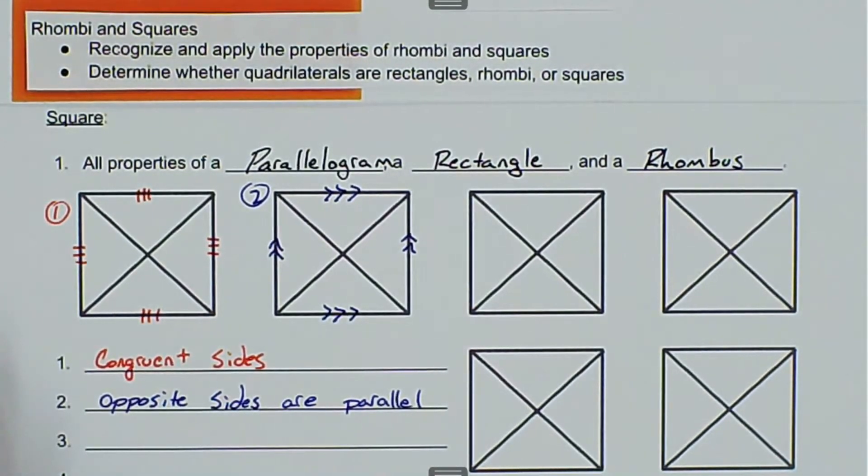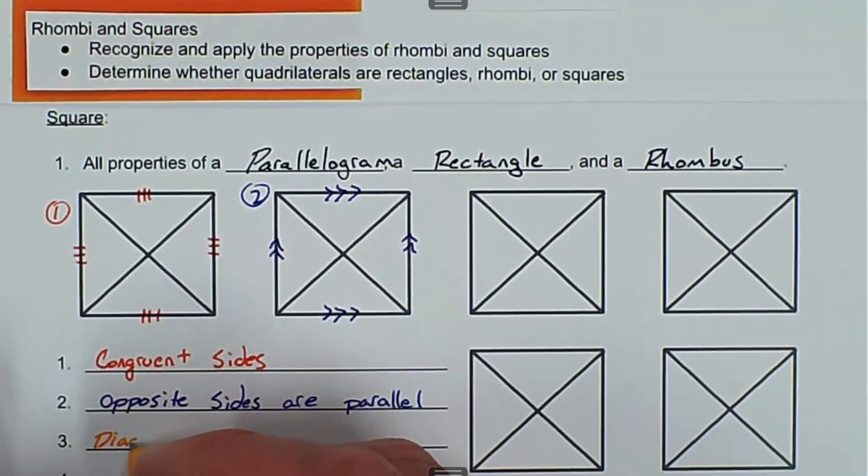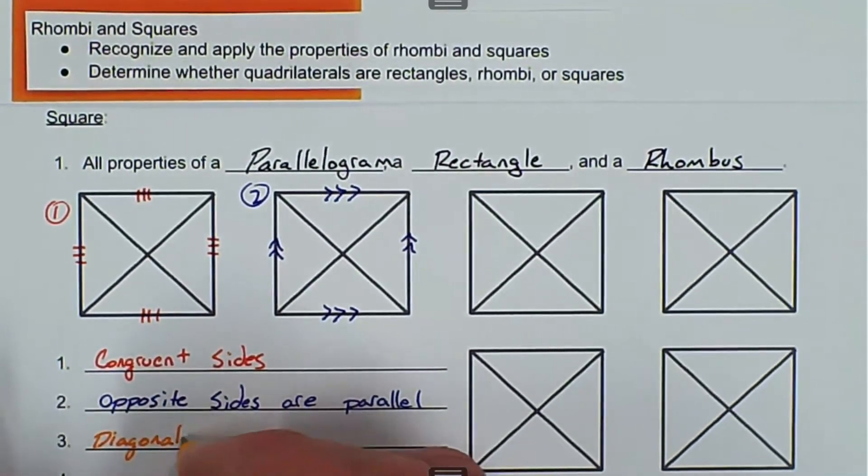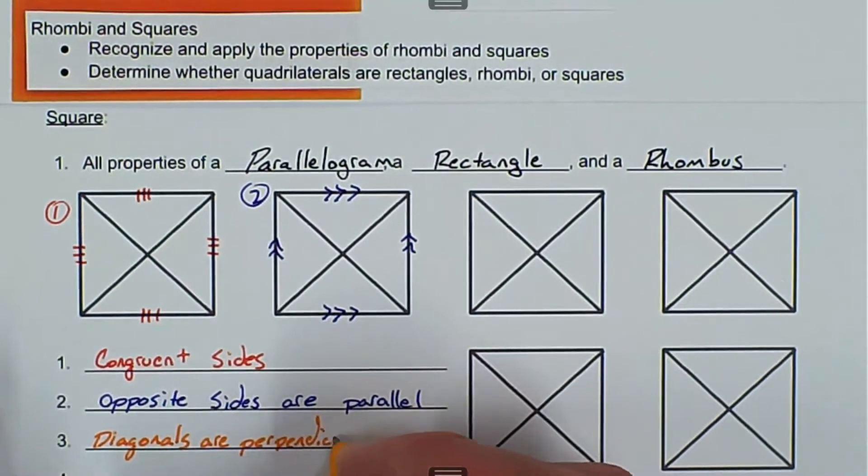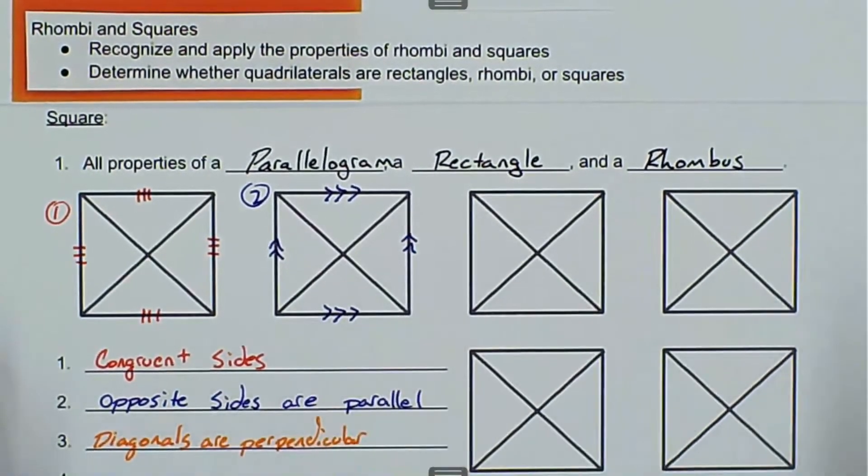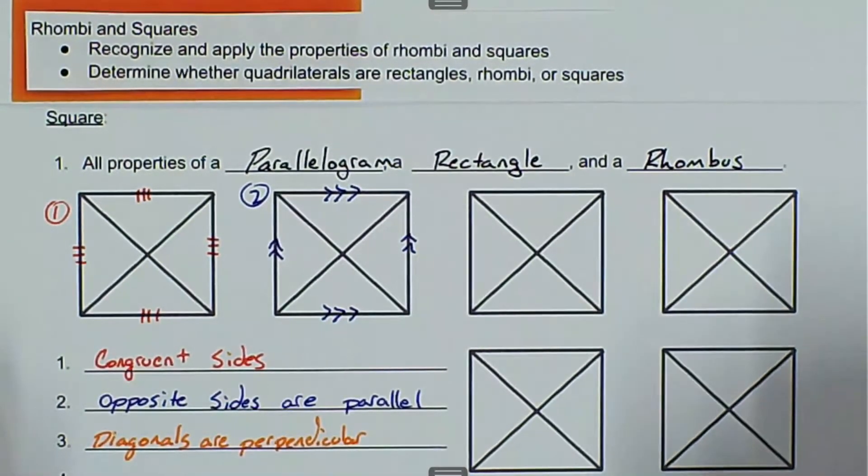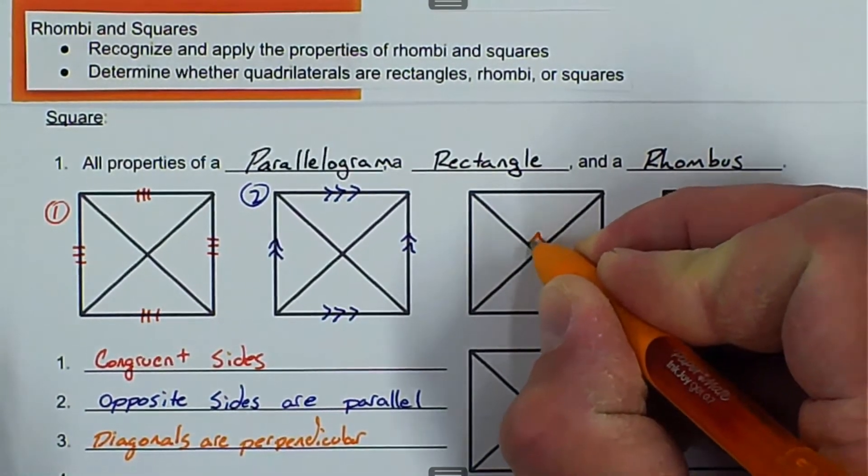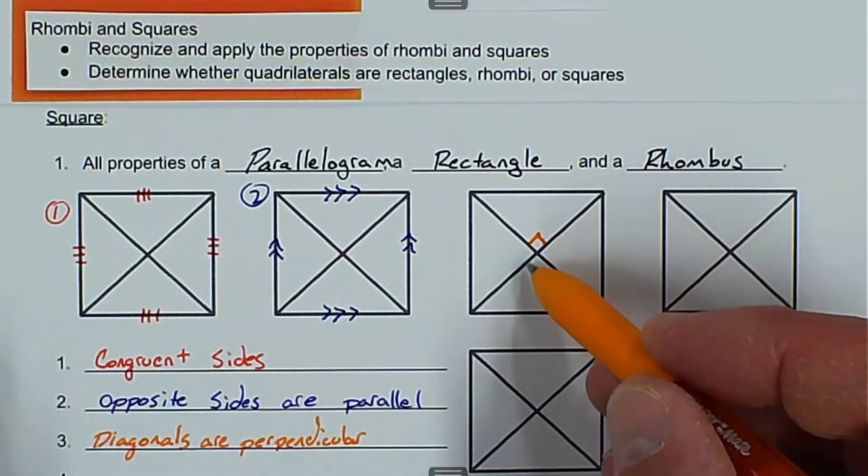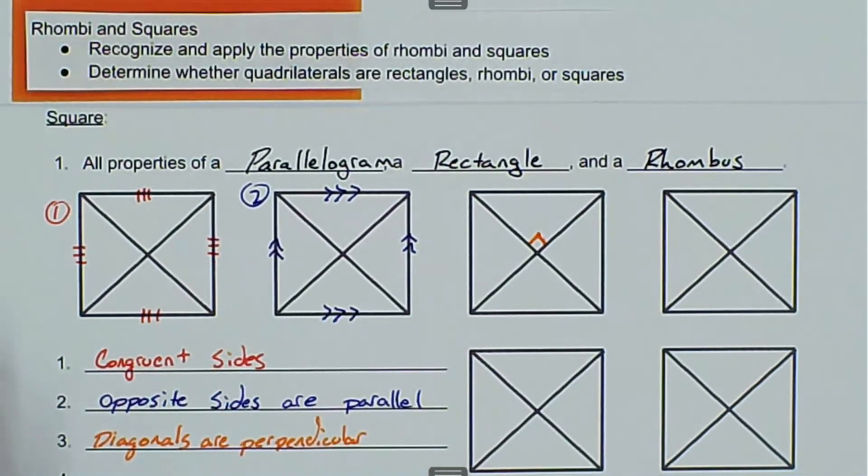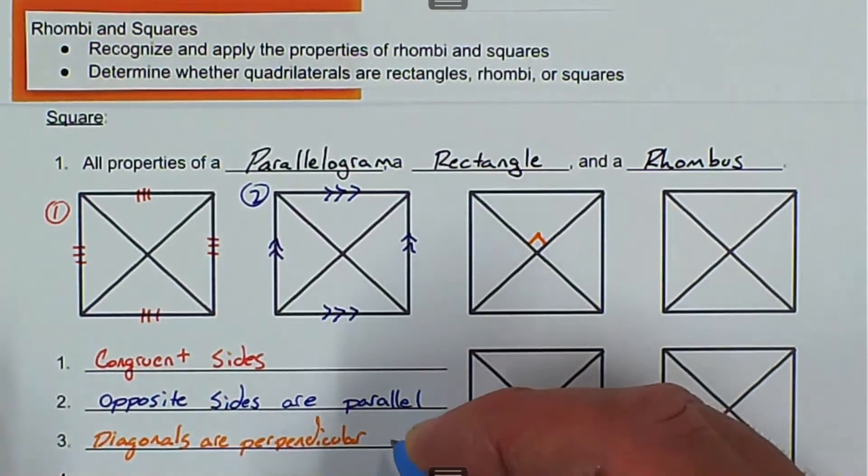Next one is diagonals are perpendicular bisectors. They're perpendicular, so for that one, all we have to do is show one 90-degree angle, and then that 90-degree angle right there shows that these other ones are also 90 degrees. And they're also perpendicular bisectors.